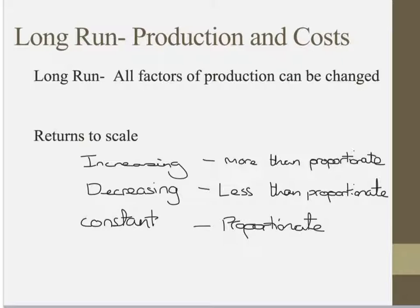Essentially, if you doubled your plant size — your land — and you doubled the amount of output, you'd have constant returns to scale. If you more than doubled output, you'd have increasing returns to scale, and if you less than doubled it, you'd have decreasing returns to scale. It's to do with the proportionate increase or decrease once you've changed a factor of production, and that's long run production theory.